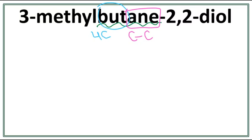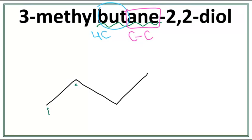So let's draw the longest carbon chain first. Our trick is that you always count till 1 less than the number of carbons you want to draw. So: 1, 2, 3. We have the first carbon here, second carbon, third carbon, and the fourth carbon.